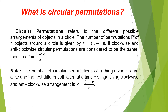What is Circular Permutations? Circular permutations refers to the different possible arrangements of objects in a circle. The number of permutations P of n objects around a circle is given by P equals (n minus 1) factorial. If clockwise and anticlockwise circular permutations are considered to be the same, then it is P equals (n minus 1) factorial over 2.